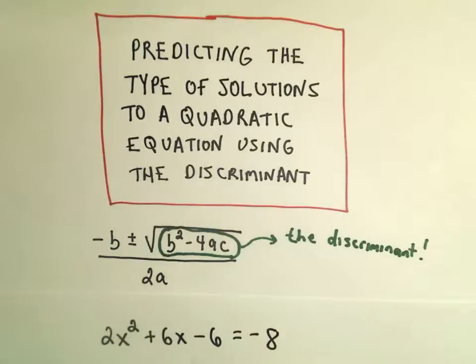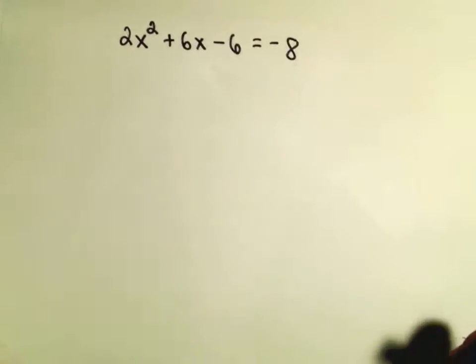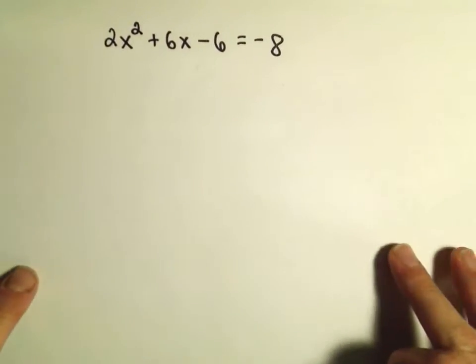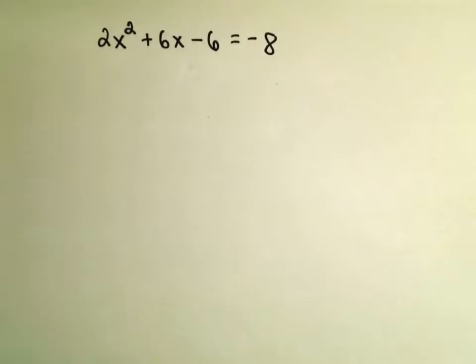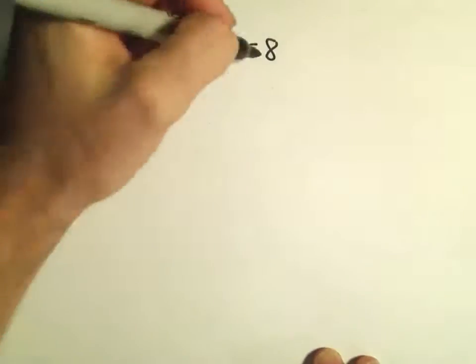So, in this case, we've got the problem 2x squared plus 6x minus 6 equals negative 8. Again, before you start plugging things in to the quadratic formula or to the discriminant, you always need one side of the equation to be equal to 0.